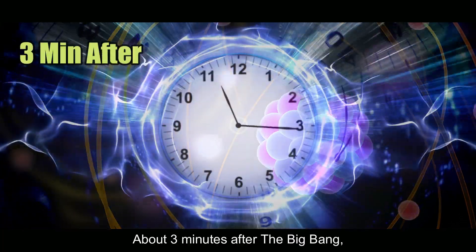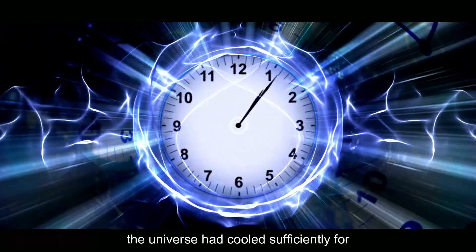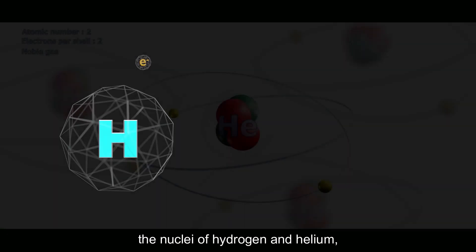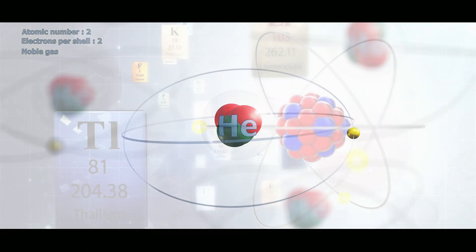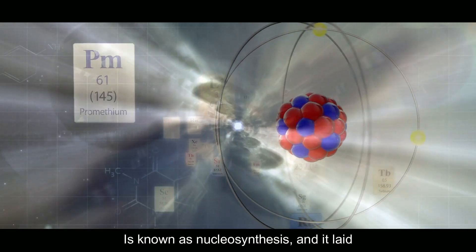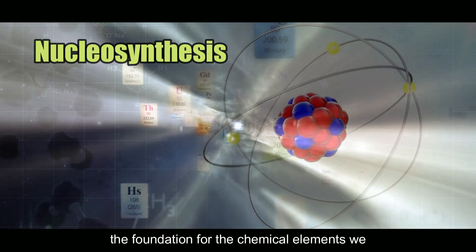About three minutes after the Big Bang, the universe had cooled sufficiently for the nuclei of hydrogen and helium, the simplest and most abundant elements, to form. This period is known as nucleosynthesis, and it laid the foundation for the chemical elements we see in the universe today.